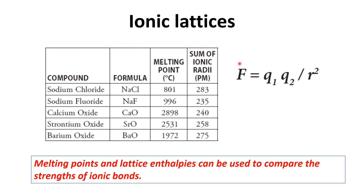The force of attraction between the ions is dependent upon two factors: the first is the charge on the ions, and the second is the distance between the ions. This force of attraction basically affects the melting point of the compounds. If the force of attraction between the ions is more, then the melting point would also be higher.